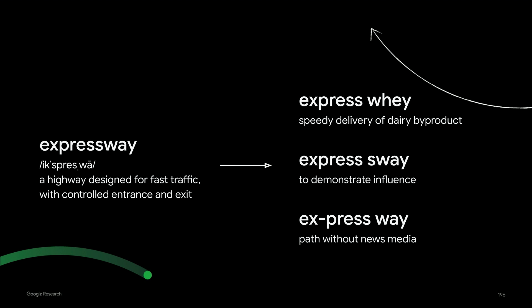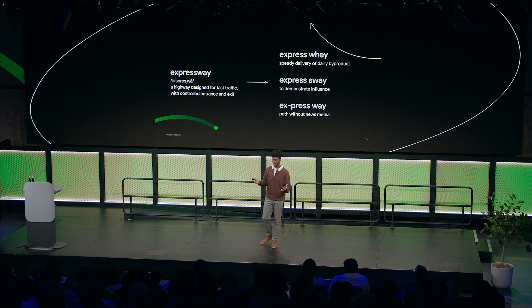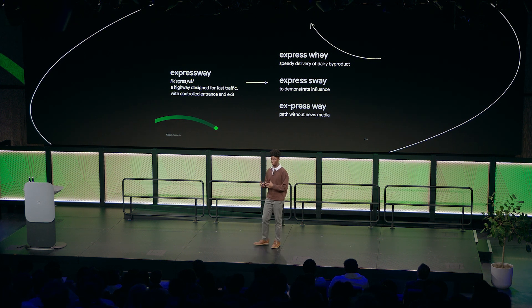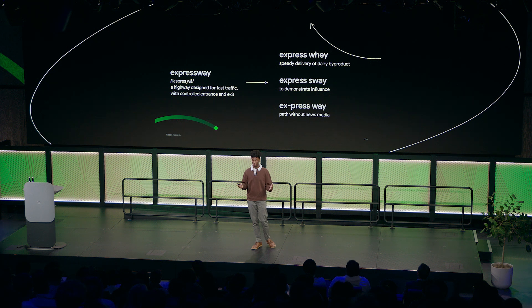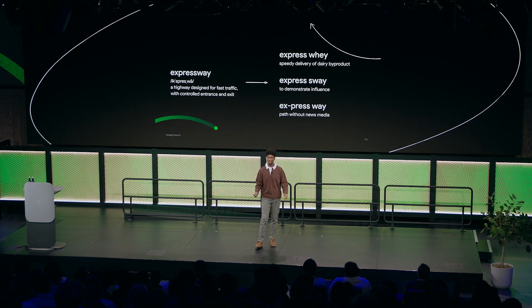Something he demonstrated for us early on was this really clever way of creating phrases that sound similar to a word, using the word 'expressway' as an example. He would take 'expressway' and expand it into phonetic reimaginings — for instance, 'expressway' as 'a speedy delivery of dairy byproduct,' or as 'a path without news media.' The output of this process isn't a lyric or a verse, but rather a creative way to look at a piece of text.